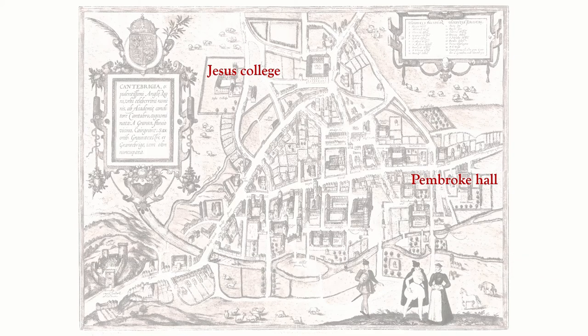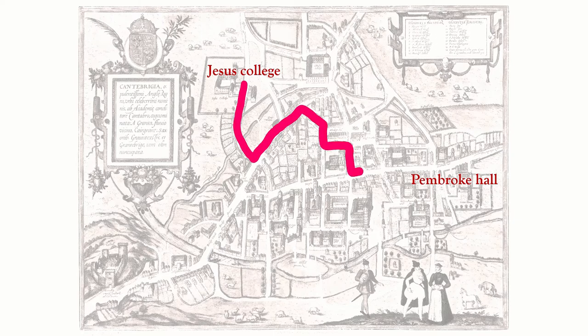A classic algorithmic question is how to find a path from A to B on a map, like this medieval map of Cambridge. The natural way to solve this sort of question is to turn it into a question about paths on a graph.